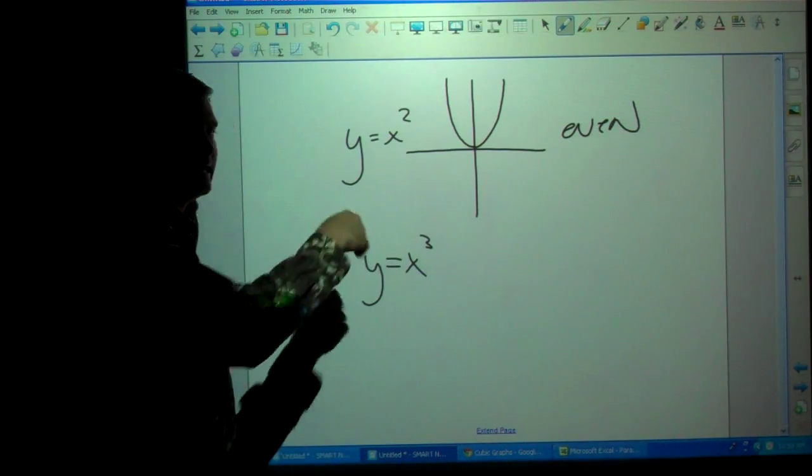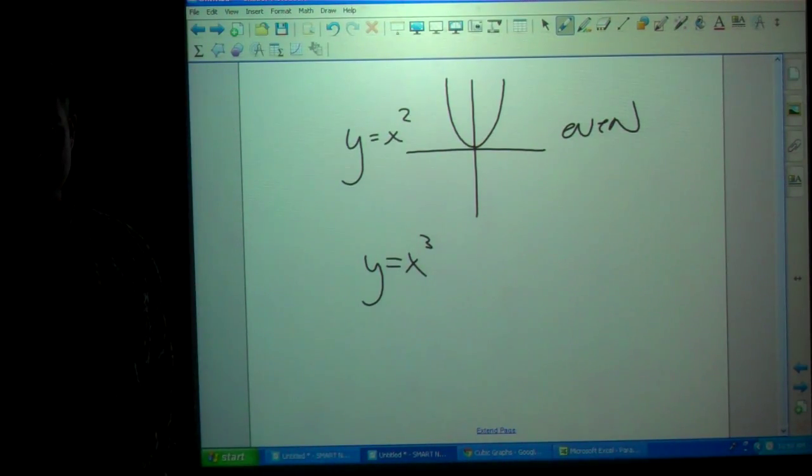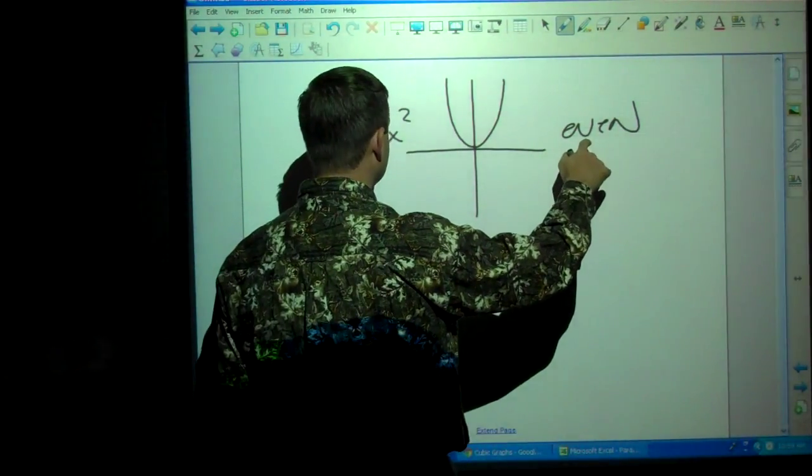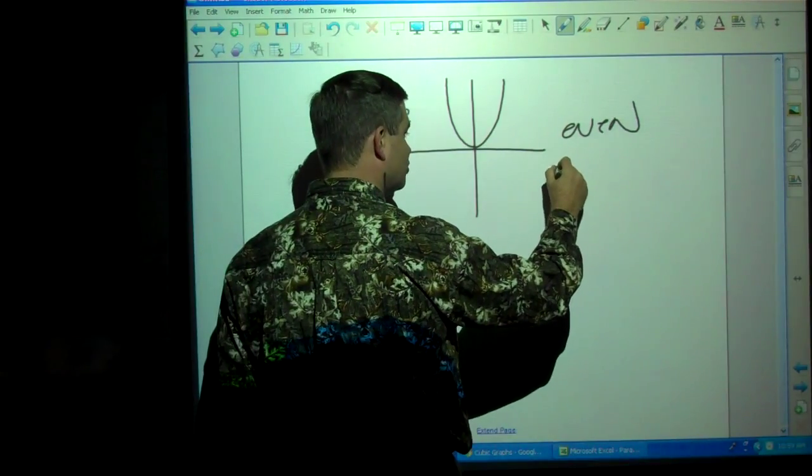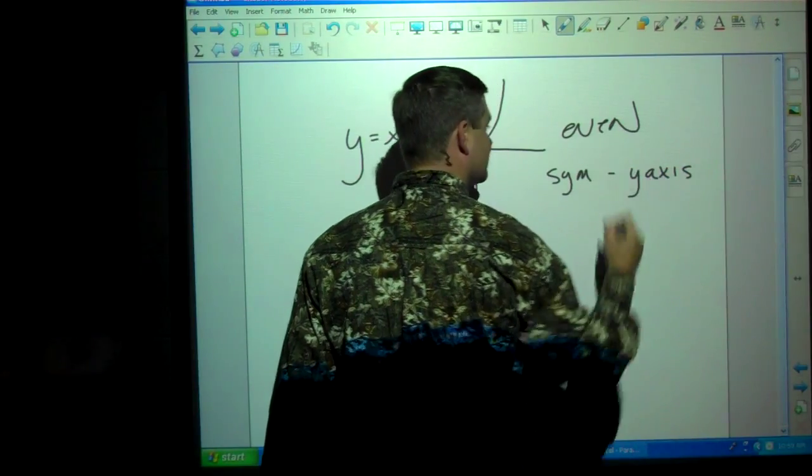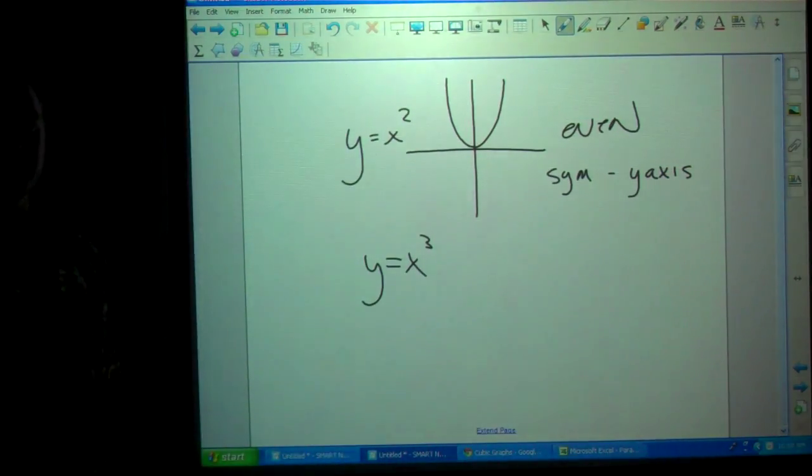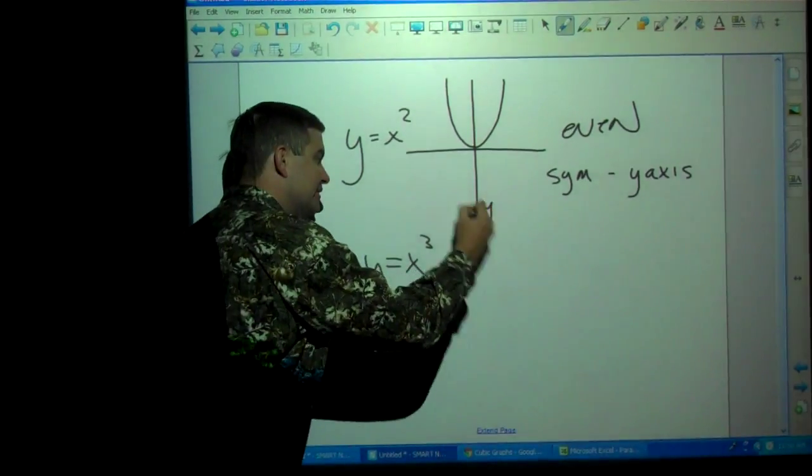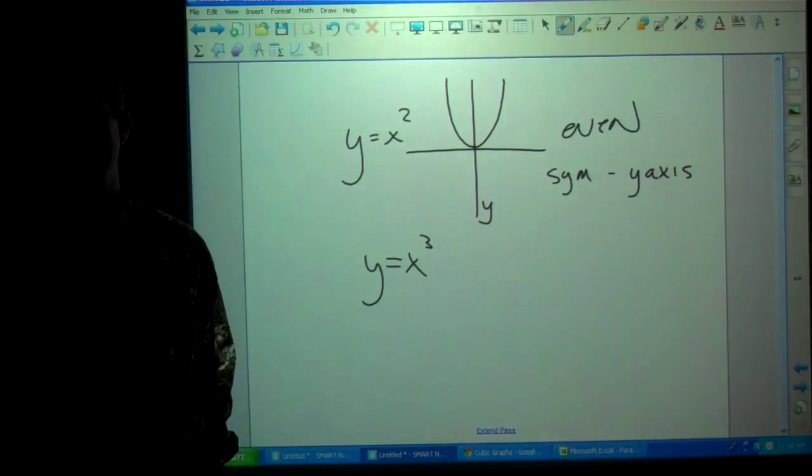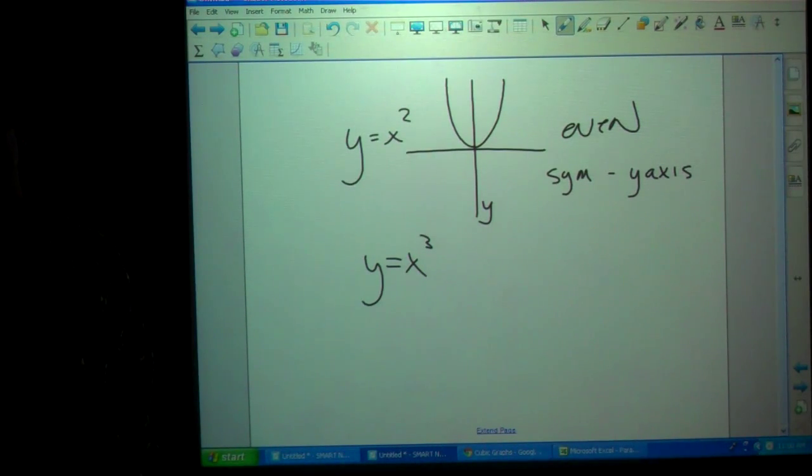You think it has something to do with the exponent, but it doesn't. The definition of even is that it is symmetrical about the y-axis. It is symmetrical about the y-axis. Remember, this is our y-axis. It cuts the parabola right down the middle. Then this is symmetrical about the y-axis. We say that it is an even function. Even.